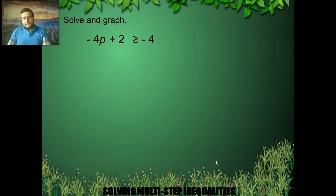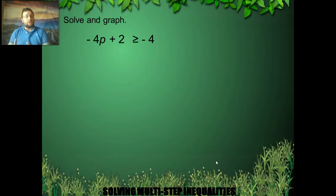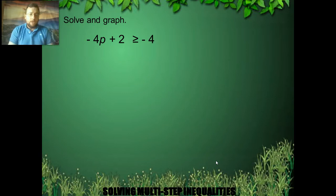Now let's see an example of that in action. Here we have negative 4p plus 2 is bigger than or equal to negative 4. The first step is to get rid of that plus 2, because you have to go in reverse order of operations and work on the side that has the variable. That means I have to get rid of the plus 2.